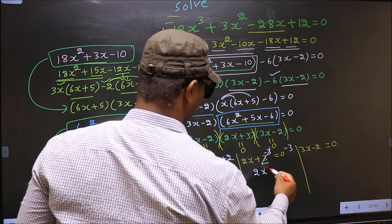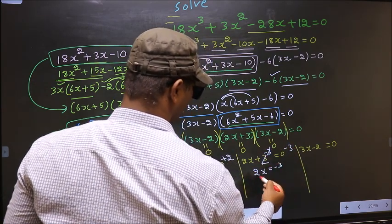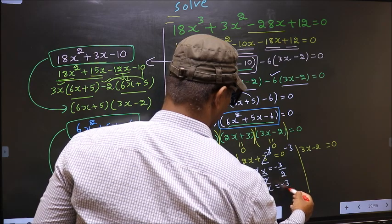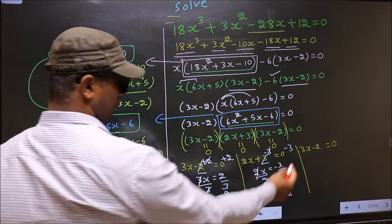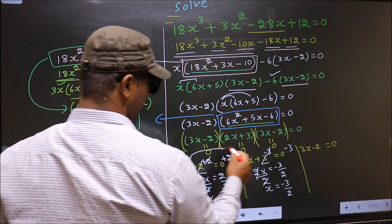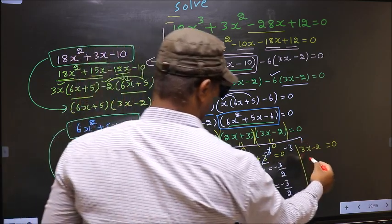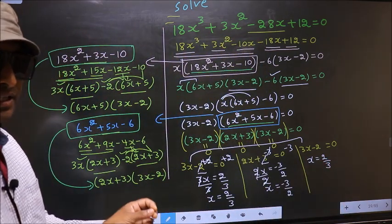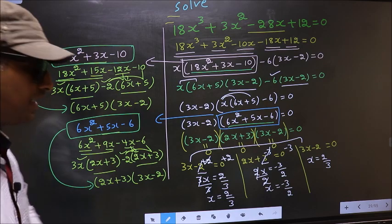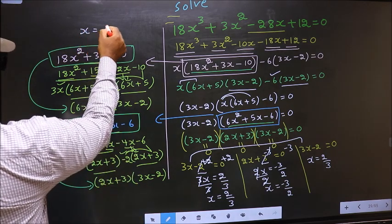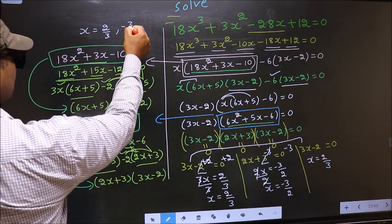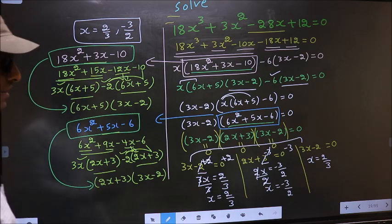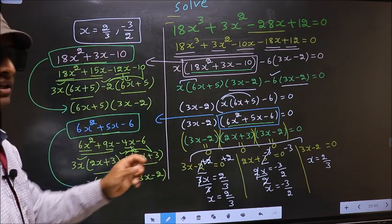The third bracket 3x - 2 = 0 gives the same result: x = 2/3. So the x values are 2/3 and -3/2. This is our answer.